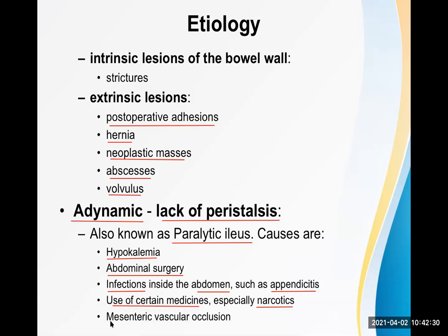Another important cause is mesenteric vascular occlusion — ischemia of the bowel. When there is no blood flow to the bowel wall, it cannot develop peristaltic movement. All of these are adynamic types of intestinal obstruction.